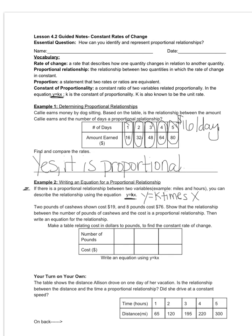So let's take a look at our problem here. Two pounds of cashews cost $19. And eight pounds cost $76. Show that the relationship between the number of pounds of cashews and the cost is a proportional relationship. Then write an equation for the relationship.